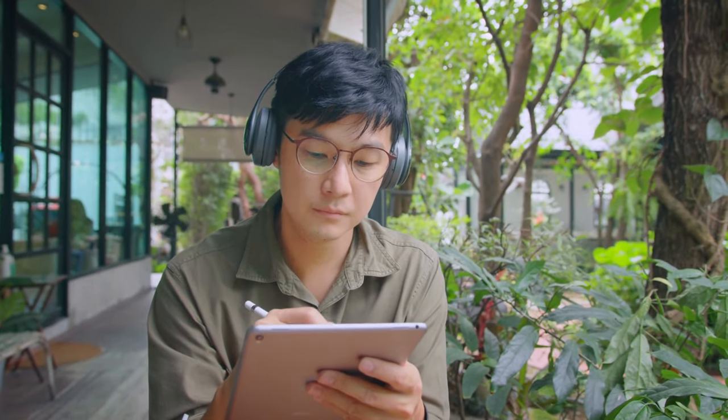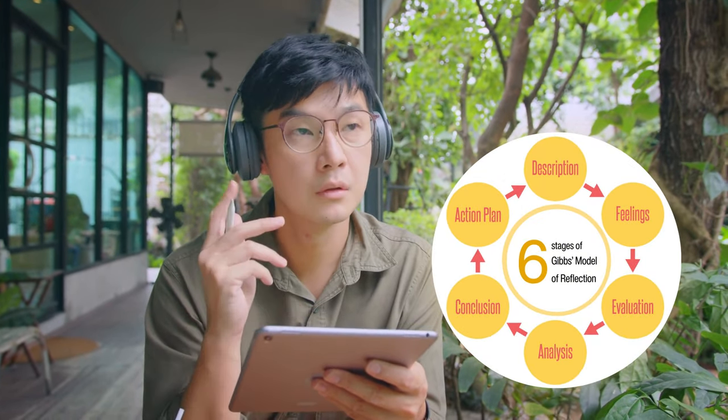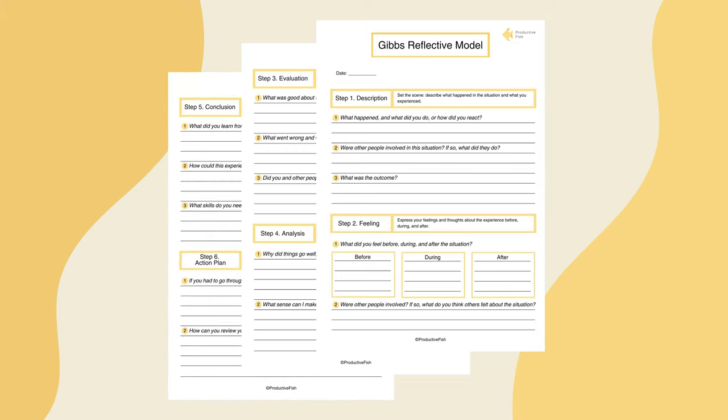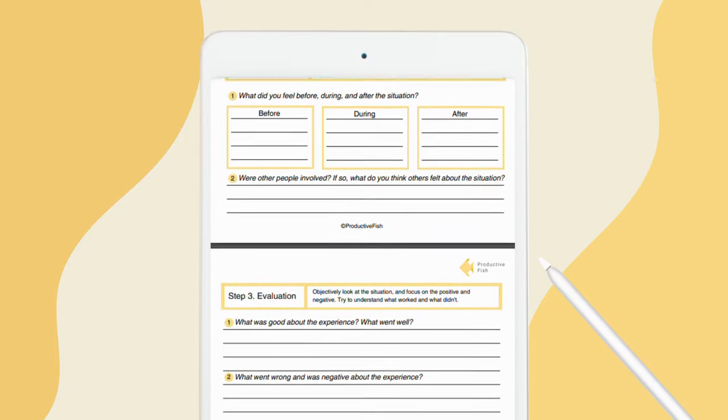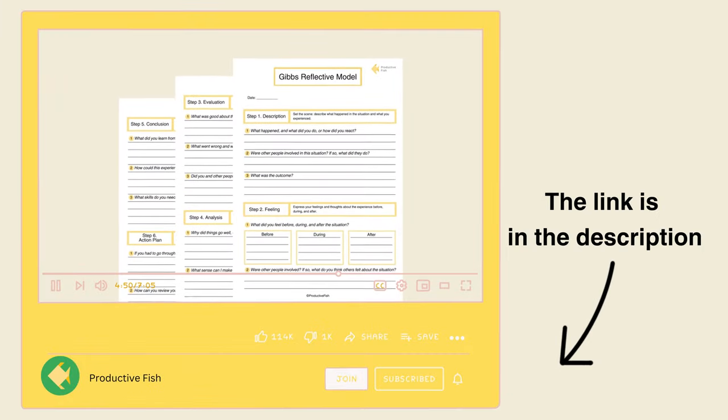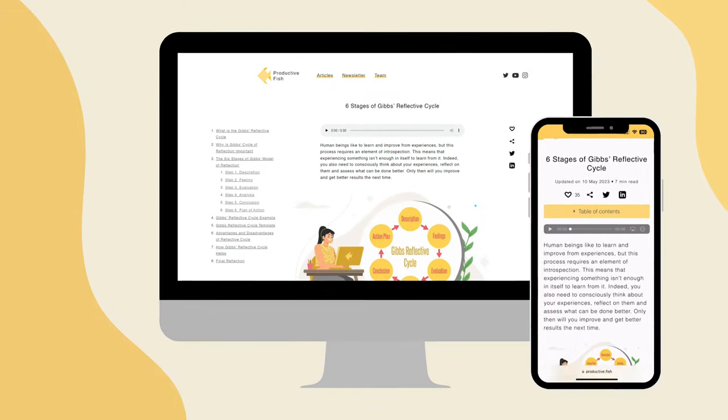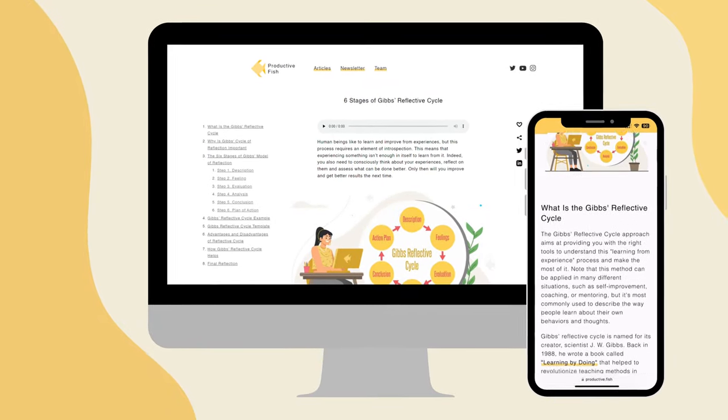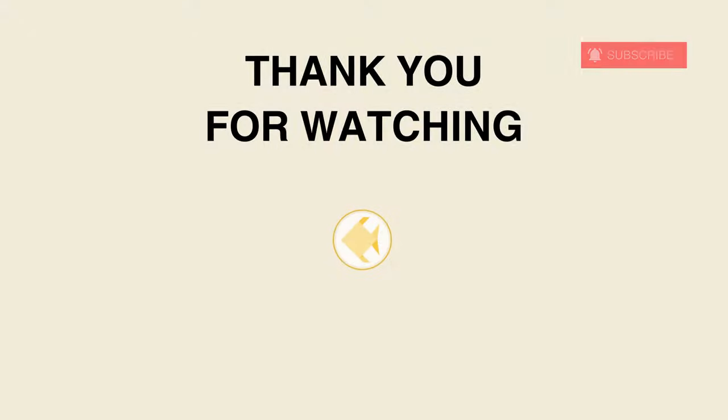So, the next time you find yourself in a challenging situation or a moment of triumph, remember Gibbs Reflective Cycle. To simplify things, we've created a template for the Gibbs Reflective Cycle so you can start using it immediately. All the steps are conveniently organized in one place and you can easily edit the text fields. Additionally, you can print out the template for creating handouts. You'll find the link in the description. To learn more about the Gibbs Cycle and how it helps, read our Article 6 Stages of Gibbs Reflective Cycle, the link is in the description. Can you recall an experience where the Gibbs Reflective Cycle would have been helpful? Share your stories in the comments below. Don't forget to like this video and subscribe for more inspiring content. Until next time, keep reflecting and keep growing!